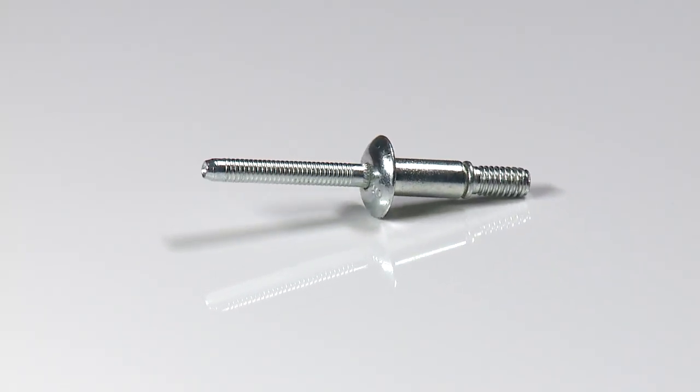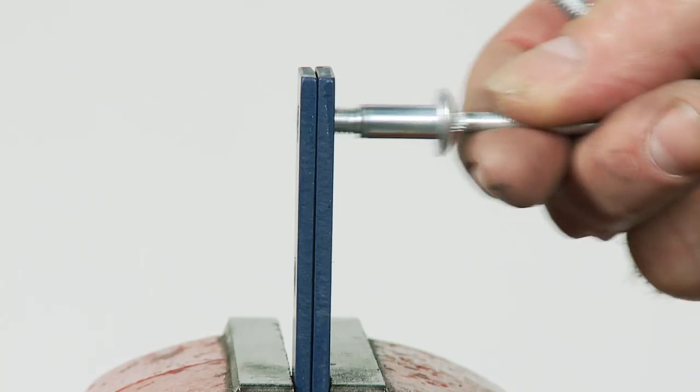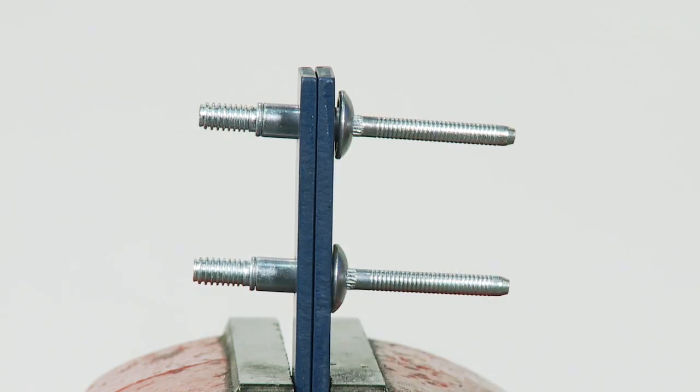What makes HuckLock different is its wide grip range and unique double locking action. This double locking action consistently clamps the assembly from both sides.